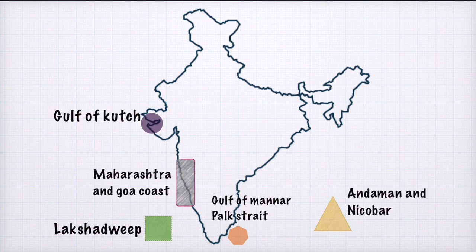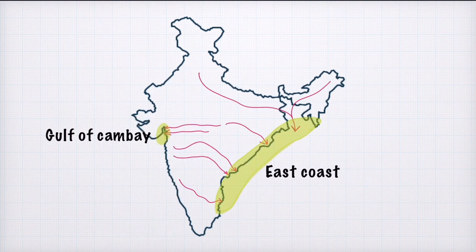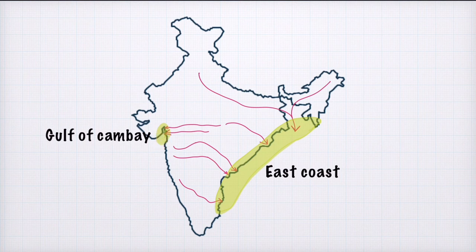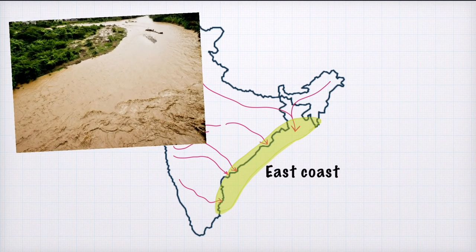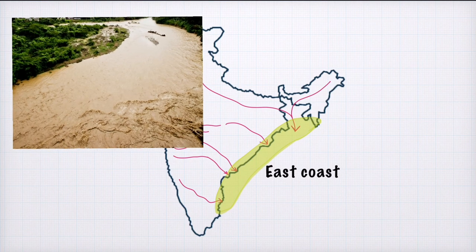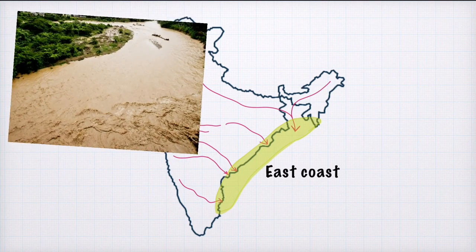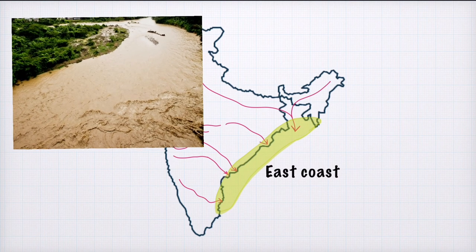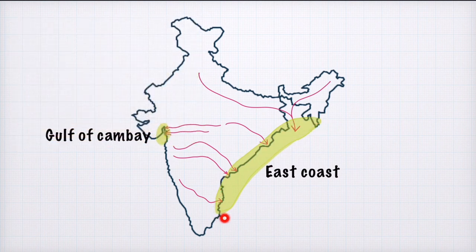Now let us also read where corals are NOT found in India. The first region where corals will not be found is the Gulf of Khambhat (Khambat ki khadi), because here the rivers Narmada and Tapi drain their water, which reduces the salinity of water in this part — so corals cannot survive here. Additionally, along the entire East Coast, you will not find corals, because very large rivers like Kaveri, Krishna, Godavari, Mahanadi, and Ganga bring sand, sediment, urban pollution, and fresh water — all of these reasons prevent coral growth there.